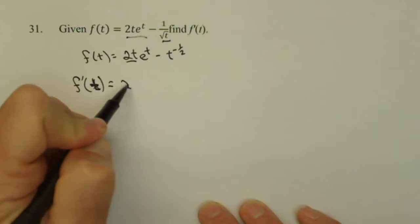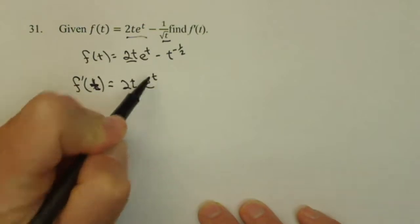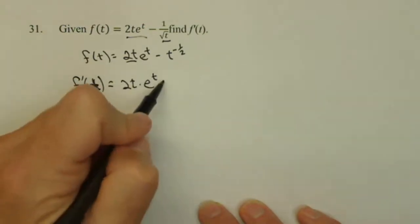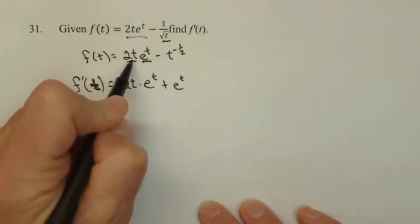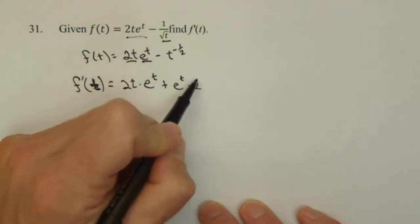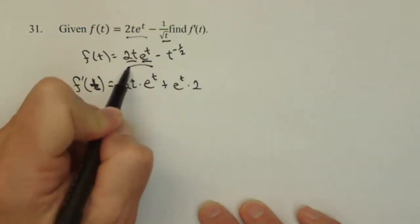So perhaps I leave the 2t alone first times the derivative of e to the t, which is e to the t, plus now I'm going to hold the e to the t constant times the derivative of 2t, which is 2. So both of these terms are the derivative of this guy.